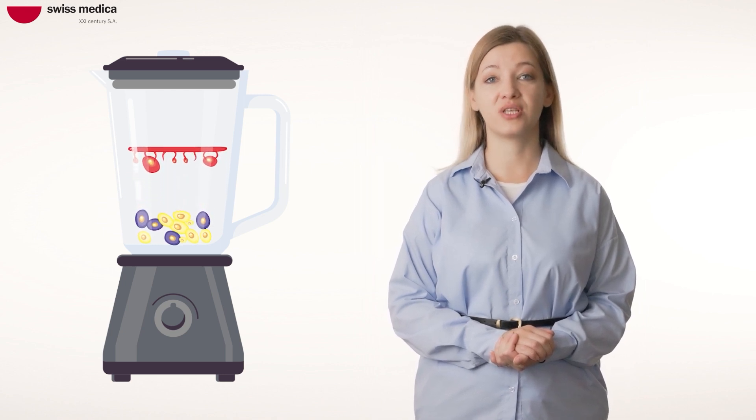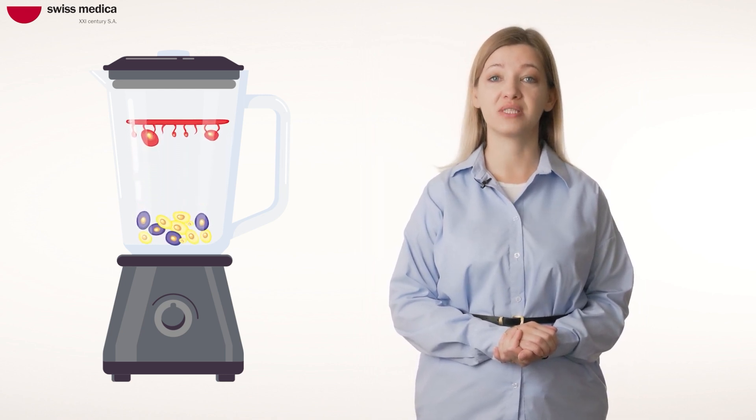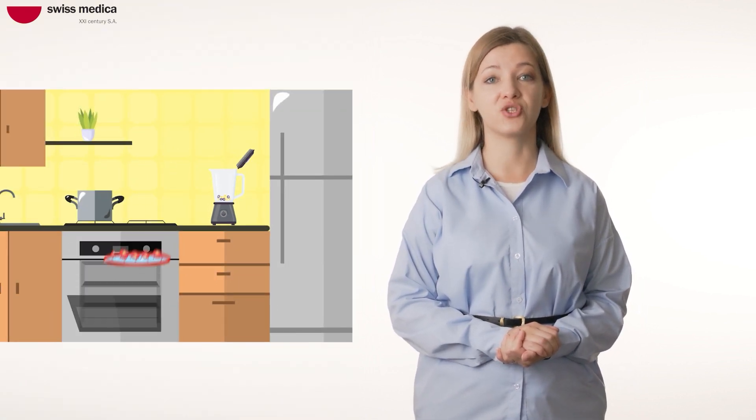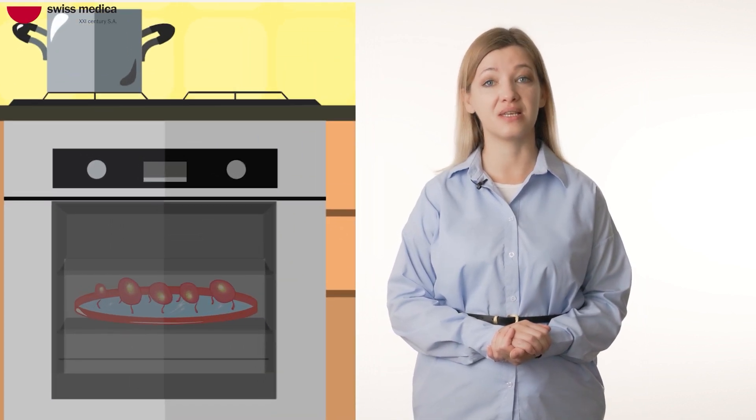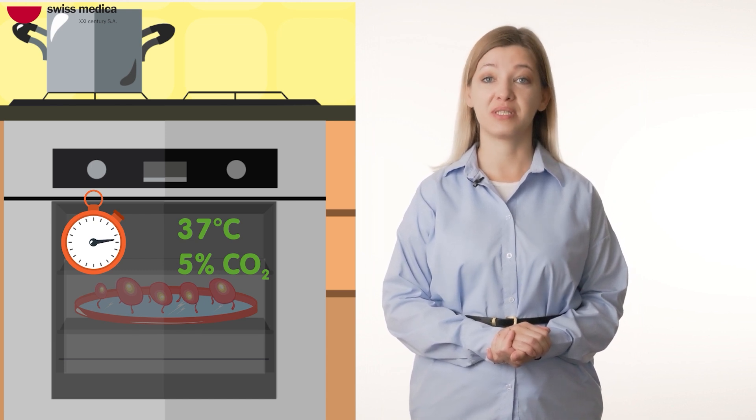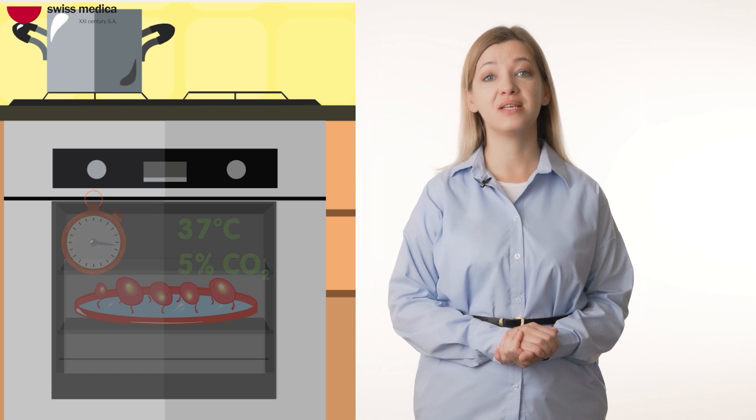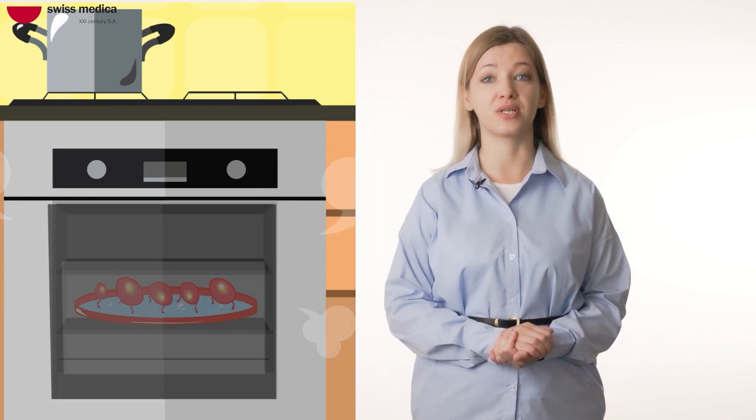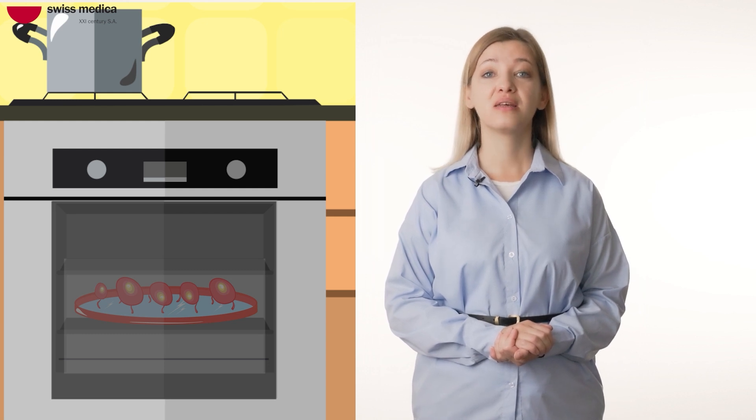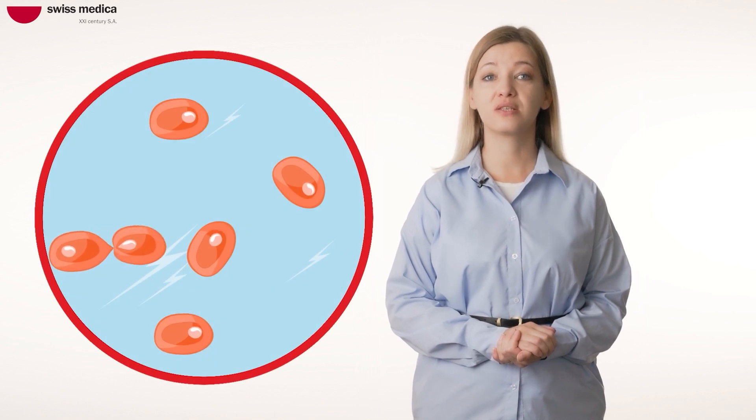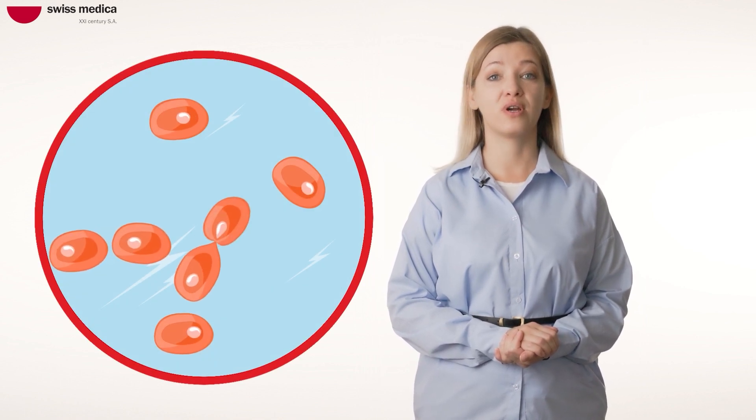The next step is expansion and quality control of MSCs. Once isolated, MSCs can be expanded and purified through cell culture techniques. The culture dishes are incubated at 37 degrees Celsius in a humidified atmosphere with 5% CO2, which is ideal for MSC growth. The culture medium is typically refreshed every 2-3 days to provide fresh nutrients and remove waste products. As MSCs proliferate, they form colonies and a monolayer of cells on the culture surface. This process can increase their numbers tens or even hundreds of times.